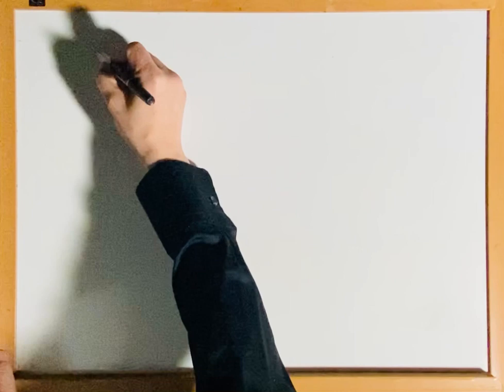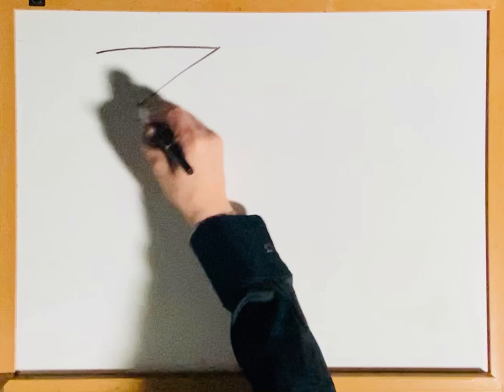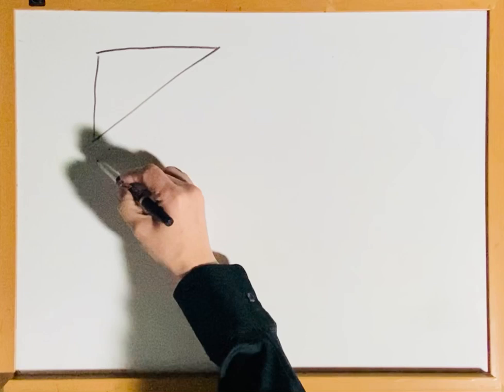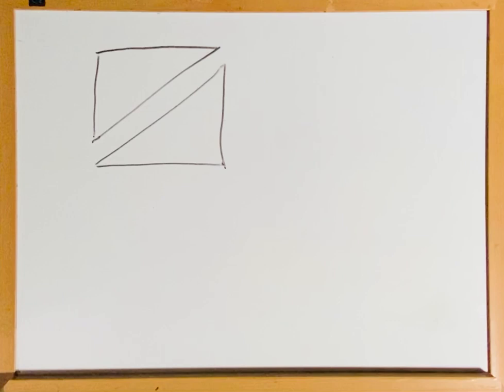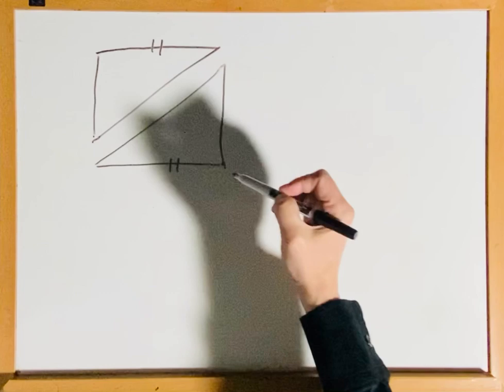Good morning everyone. We're talking about congruence and triangles. Let's write two triangles that have corresponding congruent parts. If two triangles are congruent, we need to identify pairs of corresponding congruent parts. We have here a pair of triangles, and we are given what the corresponding sides and corresponding angles are.